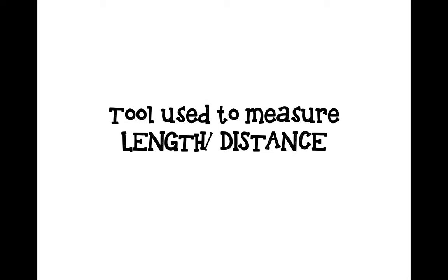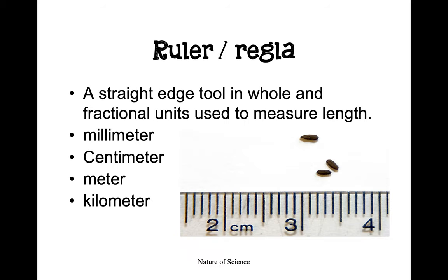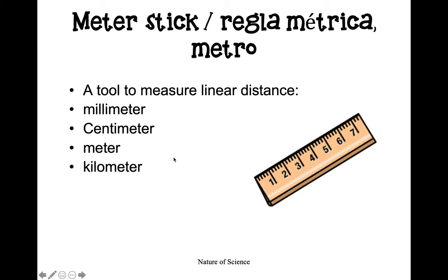Next, we'll discuss tools that are used to measure length and distance. To begin, we'll discuss a tool that you've probably already used — a ruler. A ruler is a straight-edge tool that holds whole and fractional units and is used to measure length. Rulers usually measure smaller objects, like a seed, and use millimeters and centimeters.